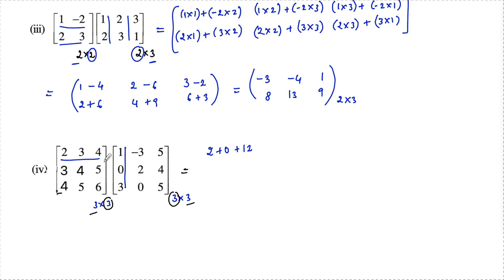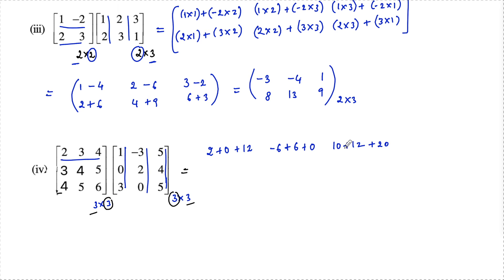First row with second column: 2 into negative 3 is negative 6, 3 into 2 is positive 6, and 4 into 0 is 0. First row with third column: 2 into 5 is 10, 3 into 4 is 12, and 4 into 5 is 20. Second row with first column: 3 into 1 is 3, 4 into 0 is 0, and 5 into 3 is 15.